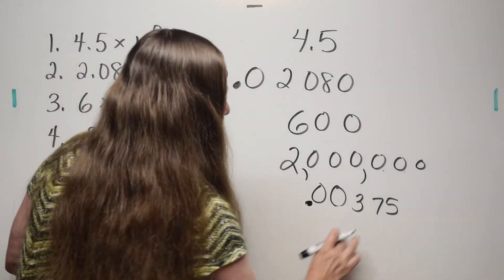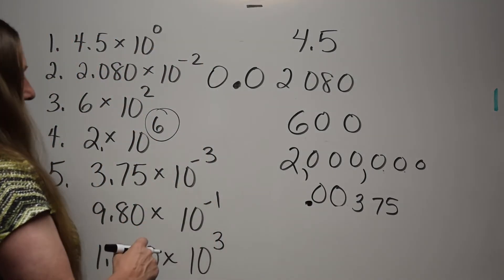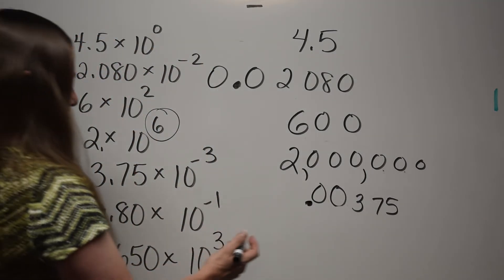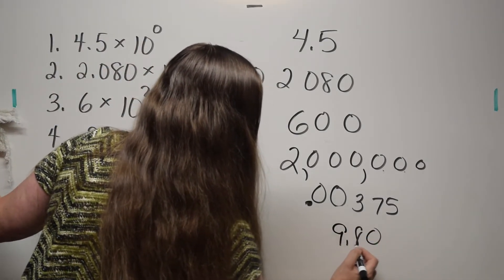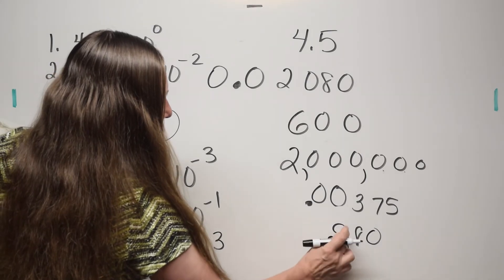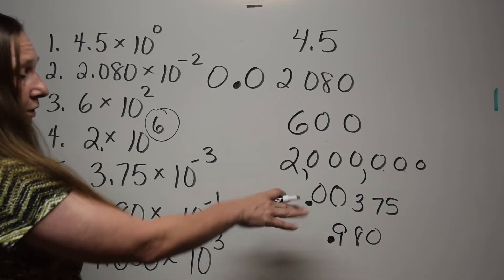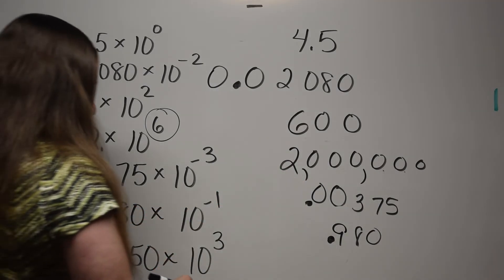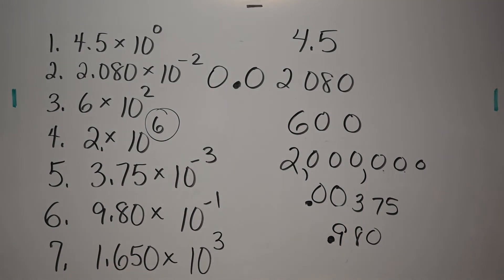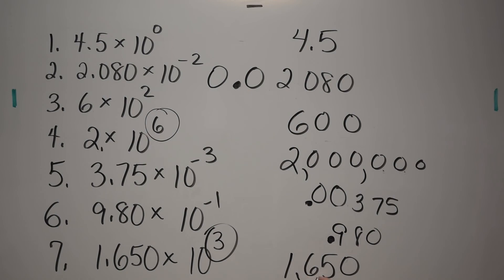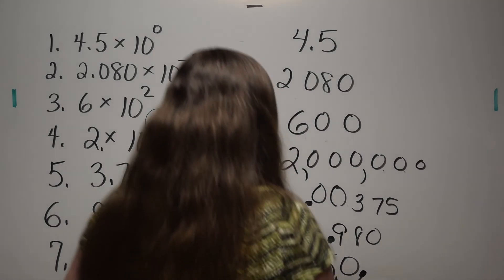9.80 times 10 to the negative one — one jump to the left. Instead of 9.80, one jump to the left puts the decimal here: now 0.980. You can do a much neater job with your decimals. Here we go: 1.650 times 10 to the third — three jumps to the right. It's a positive number, make it bigger by moving the decimal three places to the right. One thousand, six hundred and fifty.